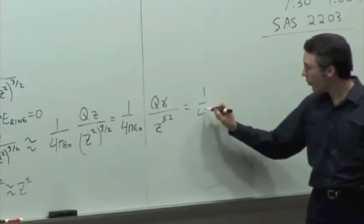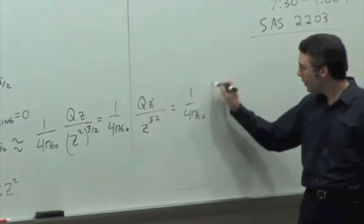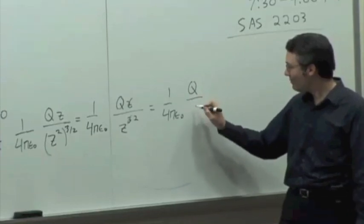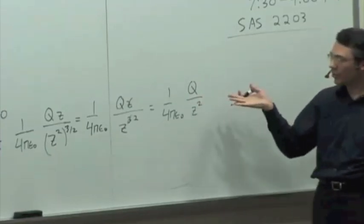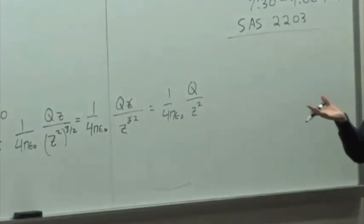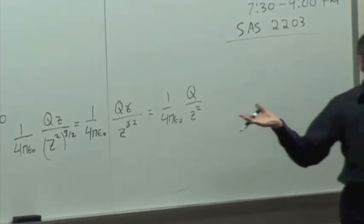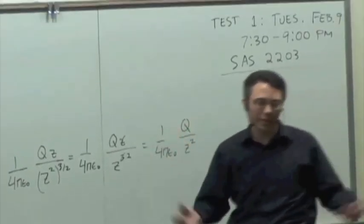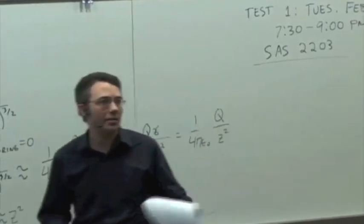So we get 1 over 4 pi epsilon 0, q over z squared, but it's a charge over distance squared, which looks like the formula for the electric field of a point charge, okay? So we're getting back something that makes sense, all right?